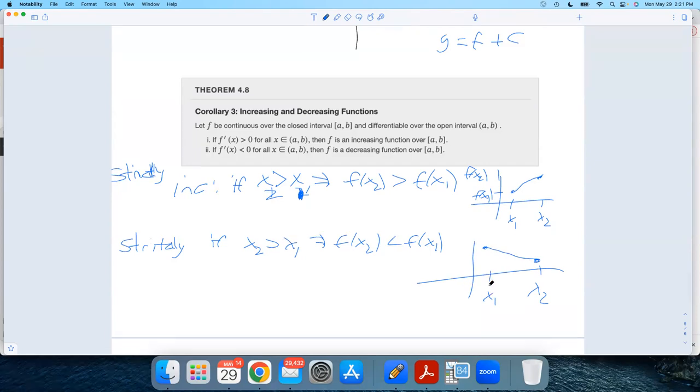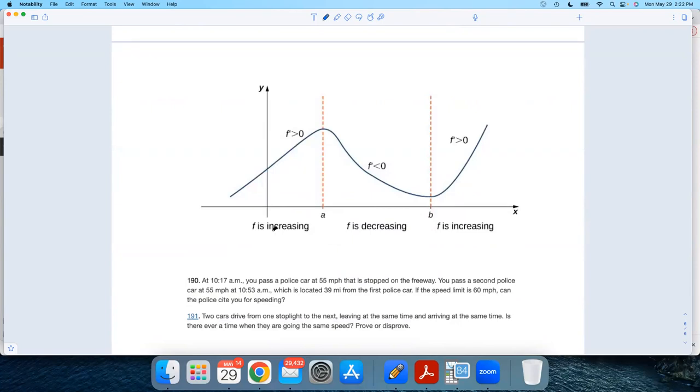Okay, so some pictures. If the derivative's positive from left to right, your graph is going up. If the derivative is negative from left to right, then the graph is going down. And then again here in this one, f prime is positive. The graph is going up. Remember, what does f prime tell you? It tells you slopes of tangent lines.